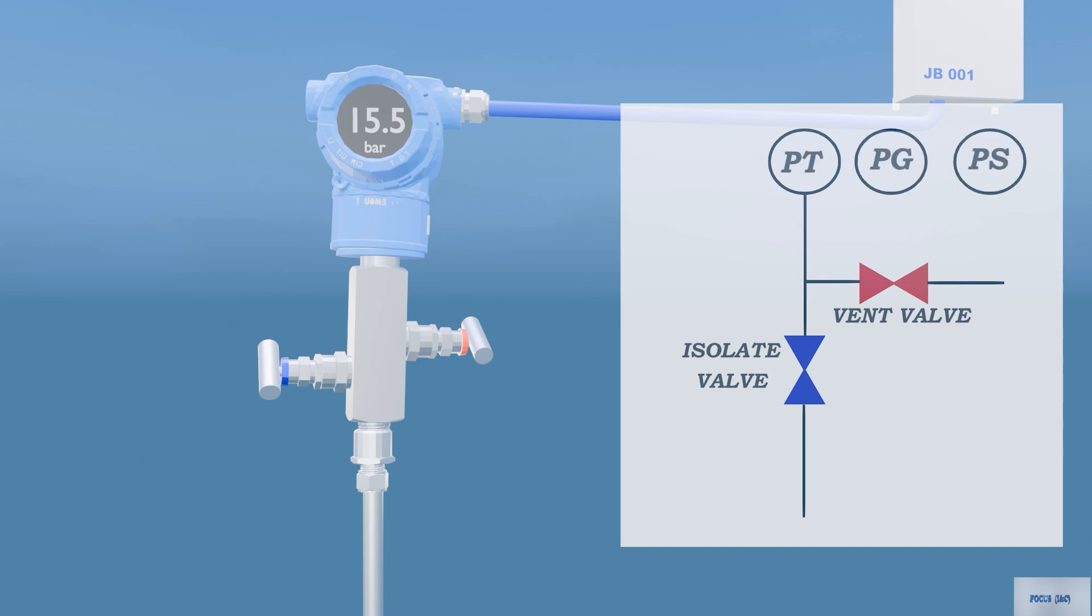Its primary function is to isolate the transmitter from the process and to vent or bleed off the process pressure. This isolation enables safe maintenance and calibration of the pressure measurement instrument.